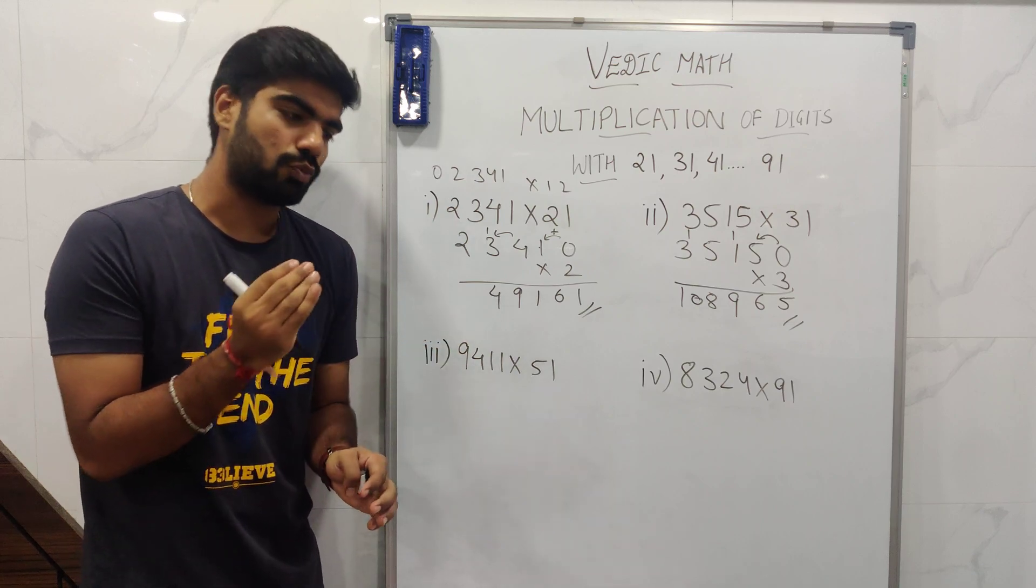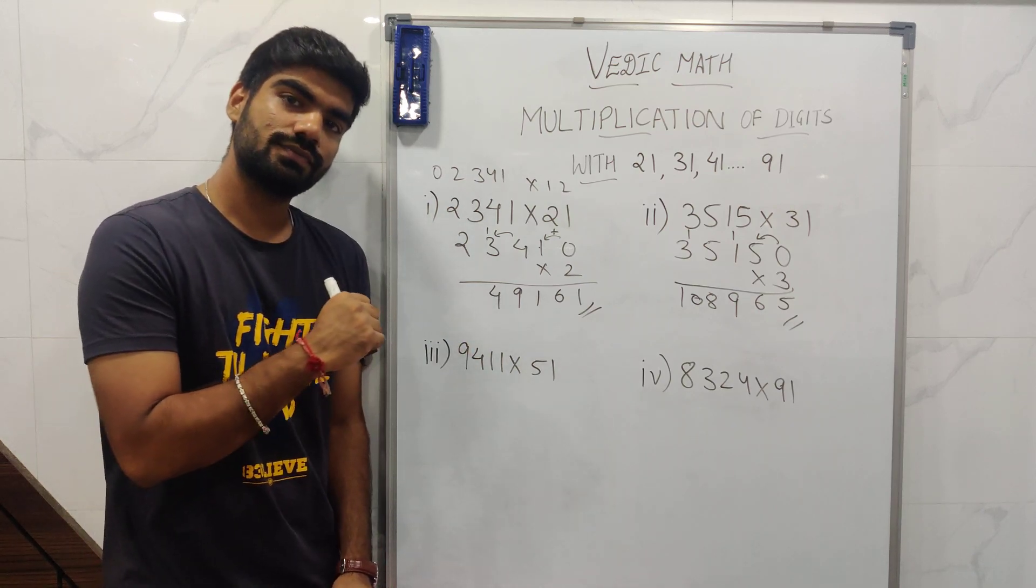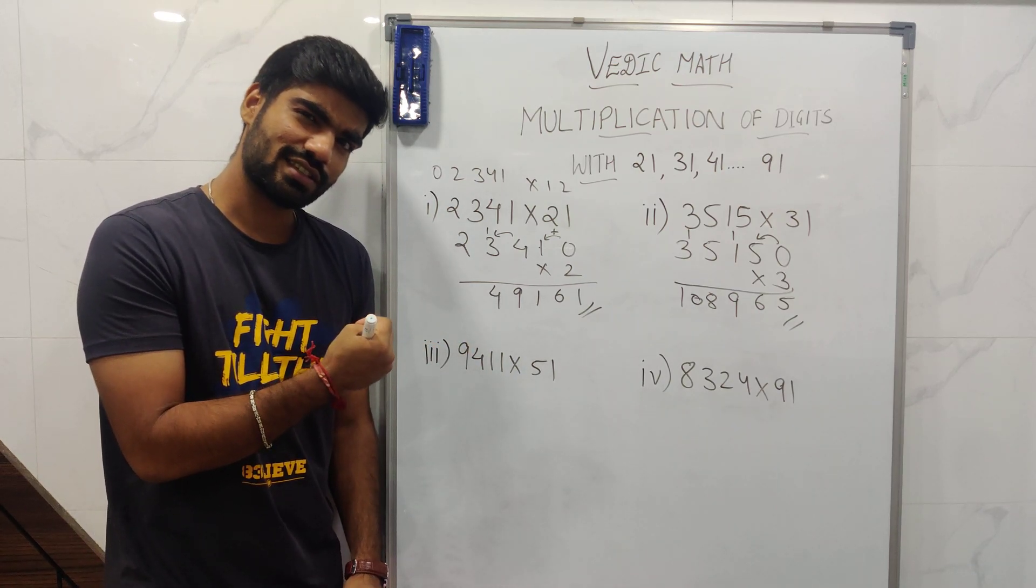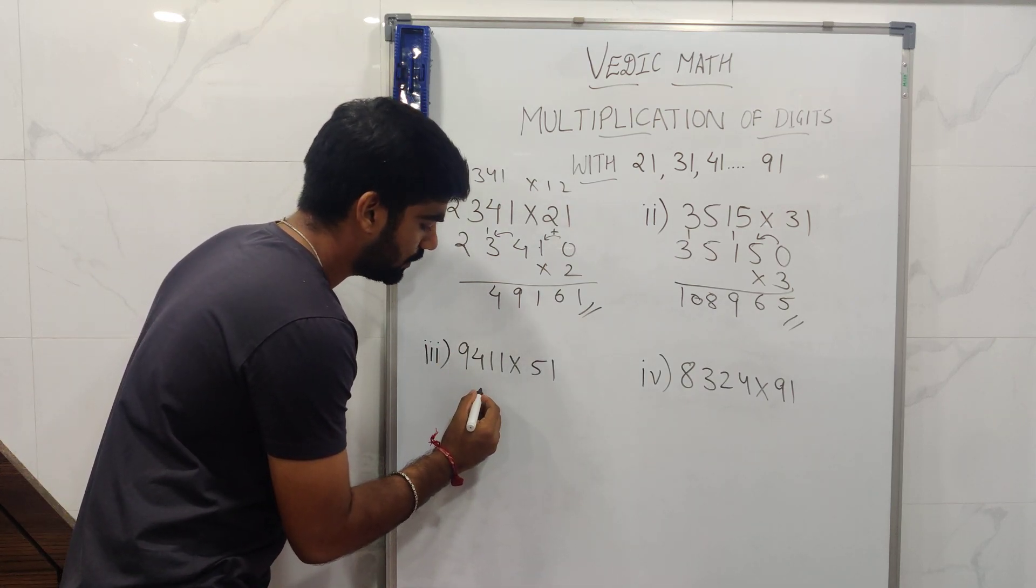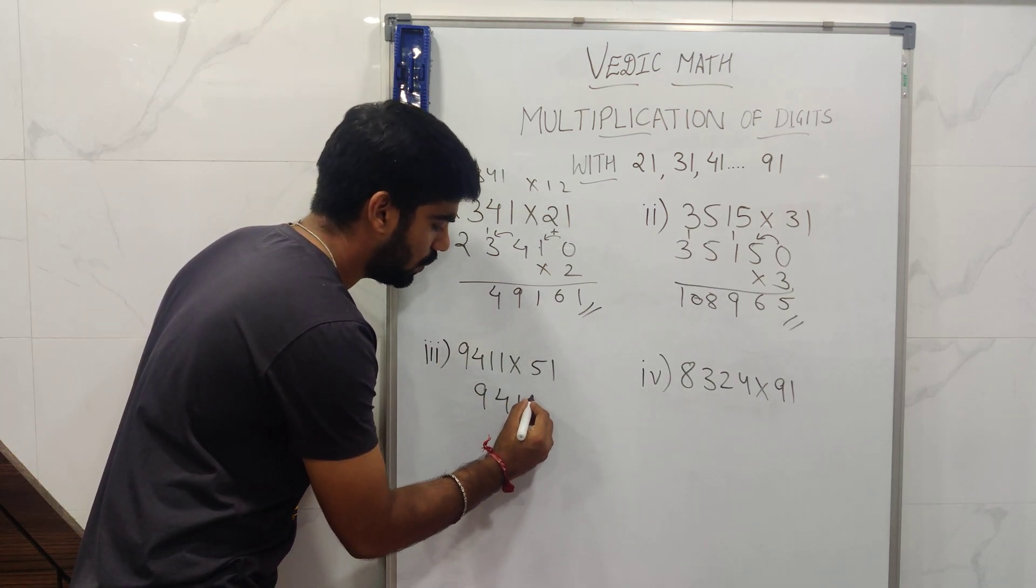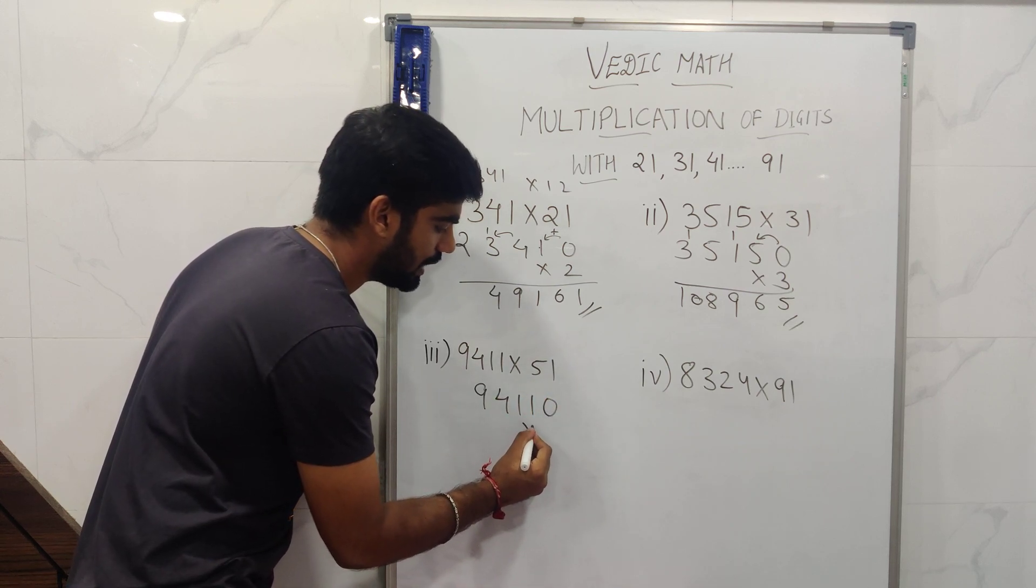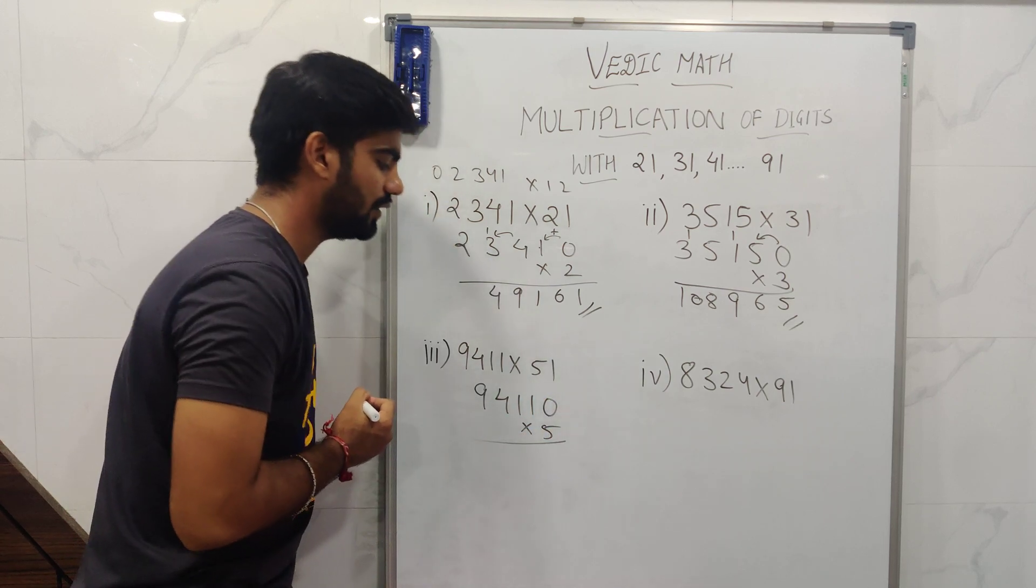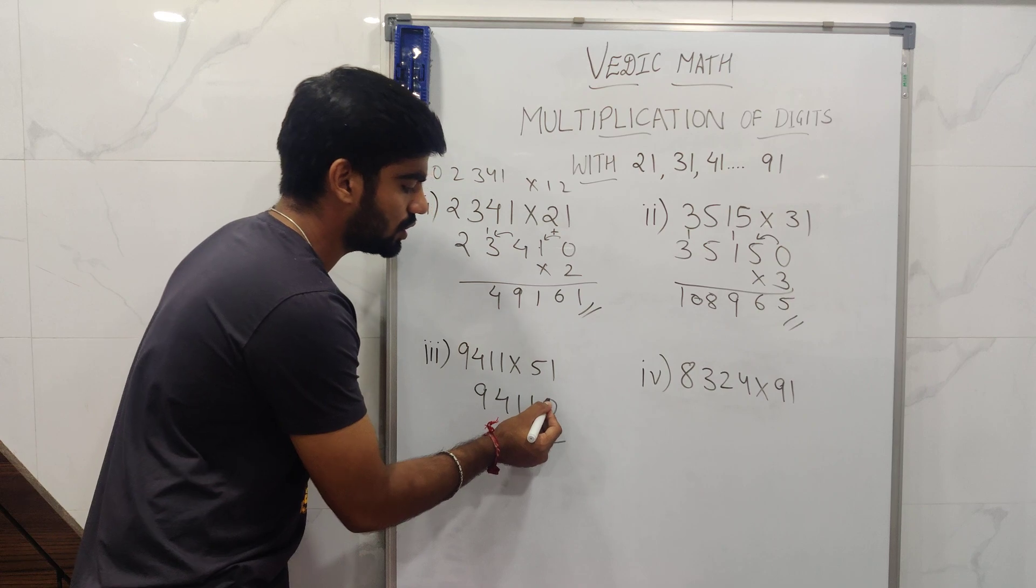If you understood the concept over here, please pause the video and solve it by yourself. Let's get the answer for this. The first step will be 9, 4, 1, 1, 0, and that multiplied by 5. So 5 into 0 is 0, 0 plus 1 is 1. 5 times 1 is 5, 5 plus 1 is 6.